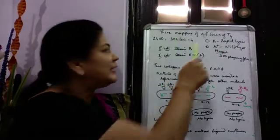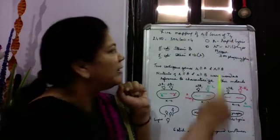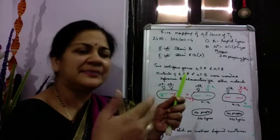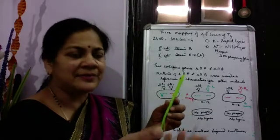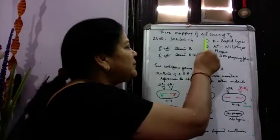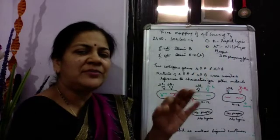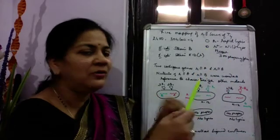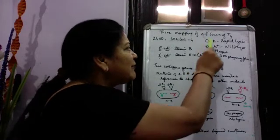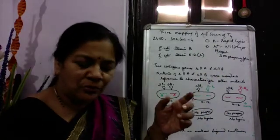The gene Benzer worked on is called R — R stands for Rapid Lysis. As the name suggests, lysis of bacterial cells is enhanced and very fast. As a result, you get larger plaques compared to the wild type. The R plaque is larger; the wild type gives smaller plaques. The morphology also differs: R plaques have sharp edges, while wild type plaques are fuzzy.